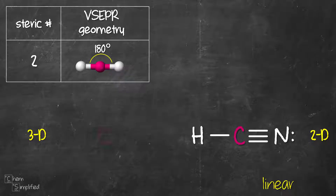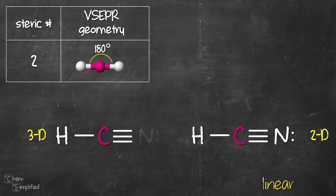We start with carbon in the middle, then we have a single bond to hydrogen and a triple bond to nitrogen. For a linear shape, all the atoms are on the same plane.